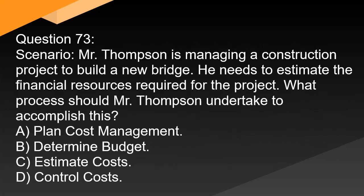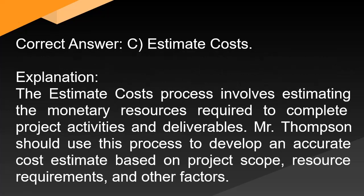Question 73: Mr. Thompson is managing a construction project to build a new bridge. He needs to estimate the financial resources required for the project. What process should Mr. Thompson undertake? A. Plan cost management. B. Determine budget. C. Estimate costs. D. Control costs. Correct answer: C. Estimate costs. Explanation: The estimate costs process involves estimating the monetary resources required to complete project activities and deliverables. Mr. Thompson should use this process to develop an accurate cost estimate based on project scope, resource requirements, and other factors.